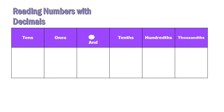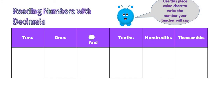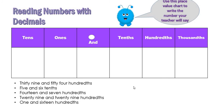Okay, here is the place value chart with the decimal point. When you want to write it in word form or read it, you will say 'and' for the decimal point. This is the whole number part, this is the decimal part: tenths, hundredths, thousandths.